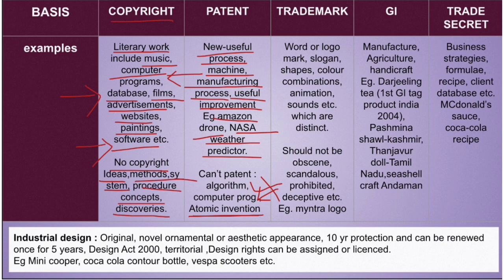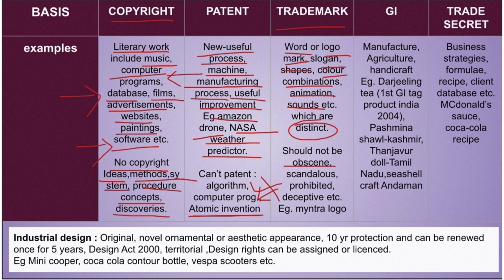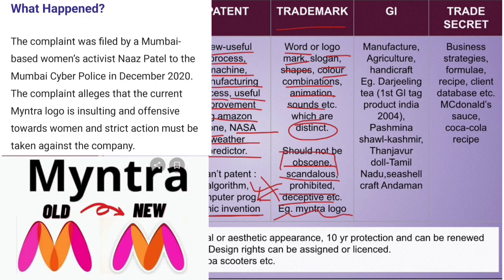What cannot be patented: algorithms cannot be patented, computer programs come under copyright not patent. And very importantly — atomic inventions cannot be patented in India. In India, there is no patent for atomic inventions.